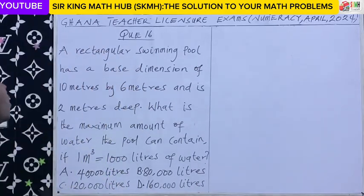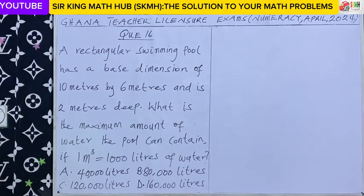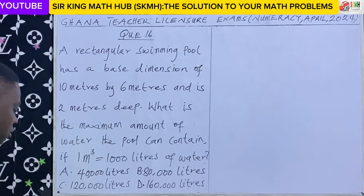Question 16. A rectangular swimming pool has a base dimension of 10 meters by 6 meters and is 2 meters deep.